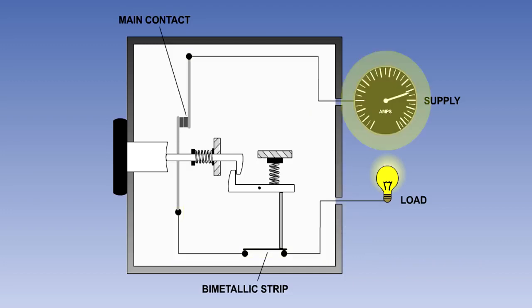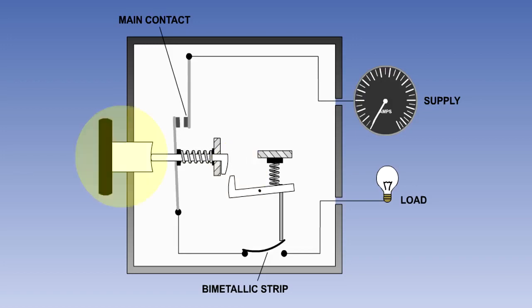If the current flow becomes excessive, the bimetallic strip will bend, as shown, opening its contacts and releasing the latch mechanism. This action will open the main contacts and cause the push-pull button to pop out, exposing a white band on the button shank to aid identification of the trip circuit breaker.